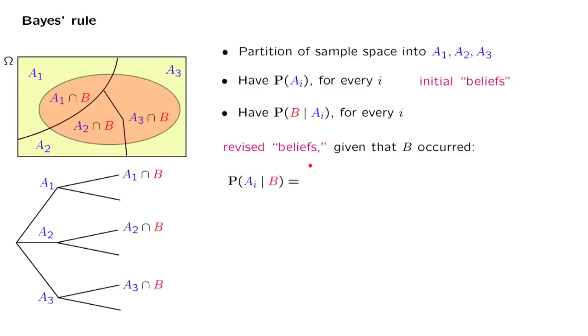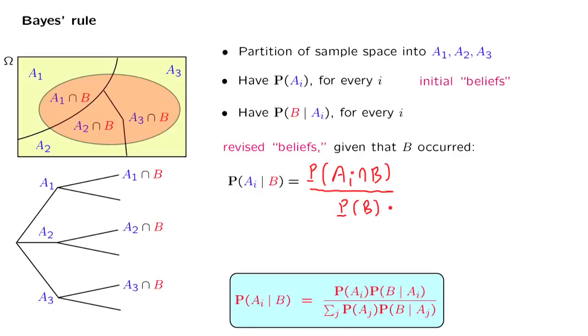How do we revise our beliefs? By calculating conditional probabilities. We start from the definition of conditional probabilities. The probability of one event given another is the probability that both events occur divided by the probability of the conditioning event. How do we continue? Well, we simply realize that the numerator is what we can calculate using the Total Probability Theorem.